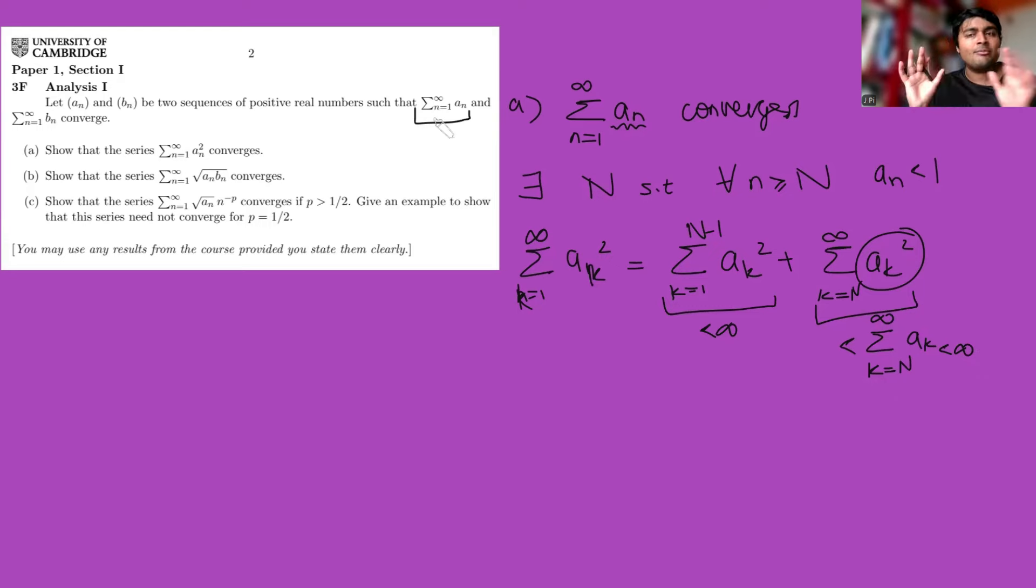That basically deals with part A. As I say, I'm not proving this super rigorously, I'm just giving you an idea. To go through this more formally you just put some epsilons and N's in there quite carefully. Let's move on to B. We want to show that the series, the sum from n equals one to infinity of the square root of a_n b_n converges. Now we see square roots here, and maybe a nice tip to keep in mind when dealing with these sorts of things is the Cauchy-Schwartz inequality.